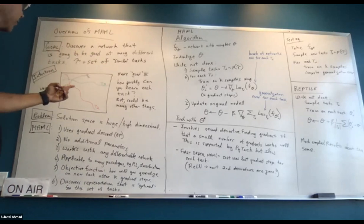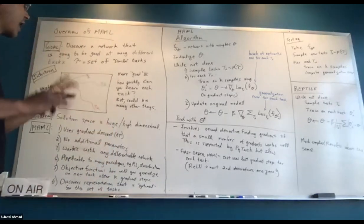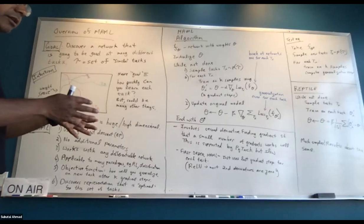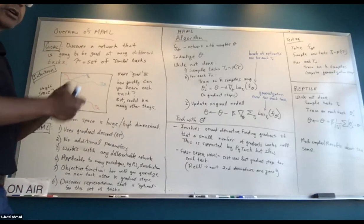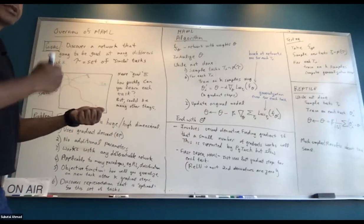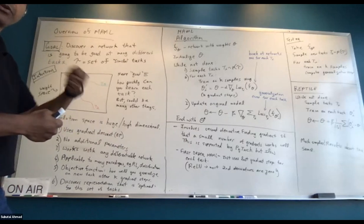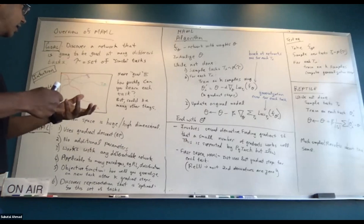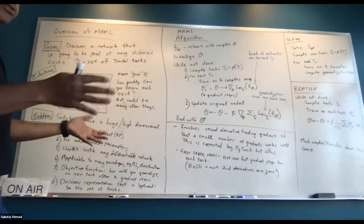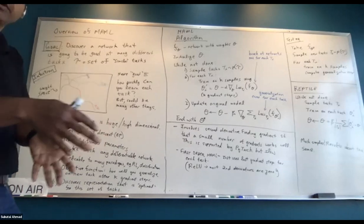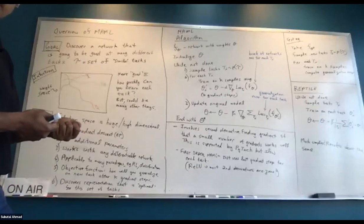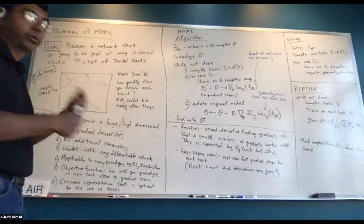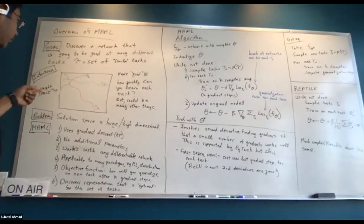Good here means how quickly you can learn each task. If you have a network trained on cats versus dogs, how many training samples do you need before it gets reasonable accuracy? K is how many samples, and K is fixed. So given five samples of cats and five of dogs, how well can you classify? It's a pretty challenging situation.